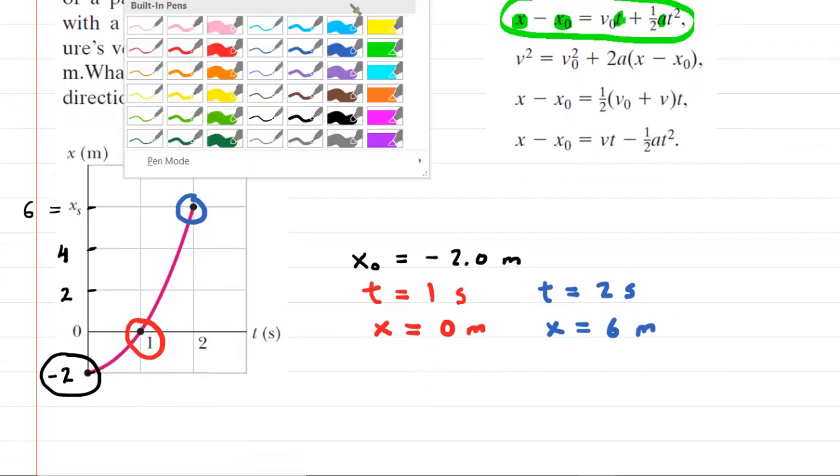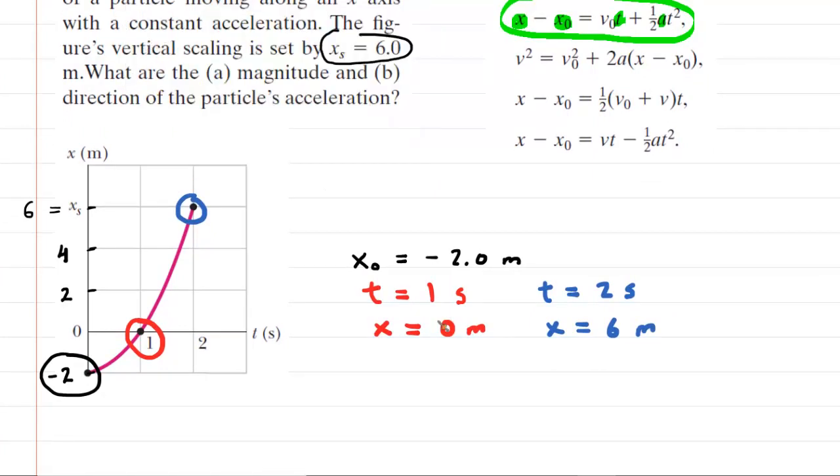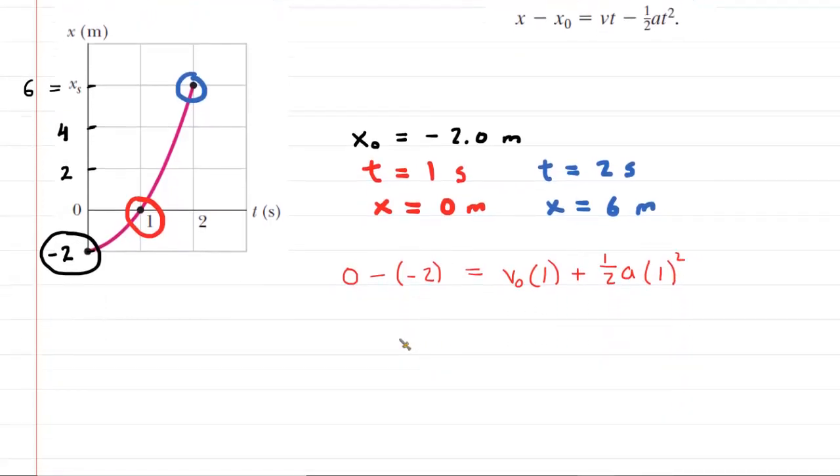First, we'll use the values in red. So here we go. We're going to say the final x position, x, which was 0 in this case, minus the initial x position, which was negative 2. And then this will equal the initial velocity multiplied by the time, which is 1 in this case, plus 1 half times the acceleration times that time of 1 squared. We could probably simplify this a bit. We could say 2 is equal to the initial velocity plus 1 half times a.